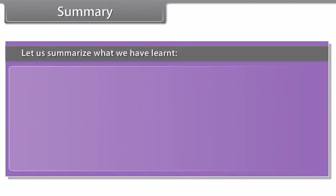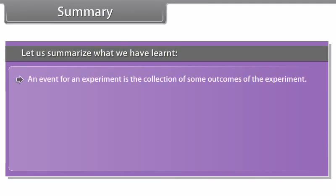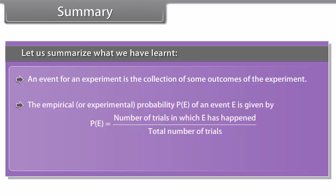Summary. Let us summarize what we have learnt. An event for an experiment is the collection of some outcomes of the experiment. The empirical or experimental probability P(E) of an event E is given by P(E) is equal to number of trials in which E has happened upon total number of trials. The sum of all the probabilities is 1.